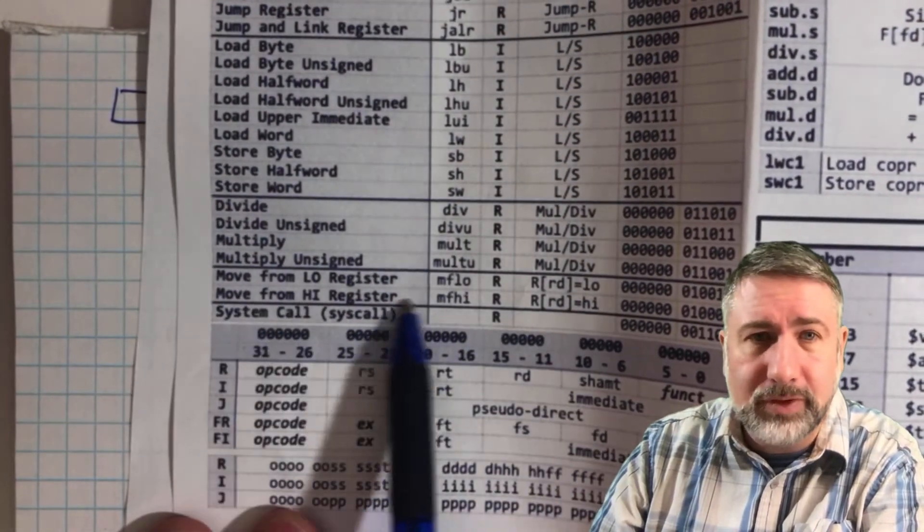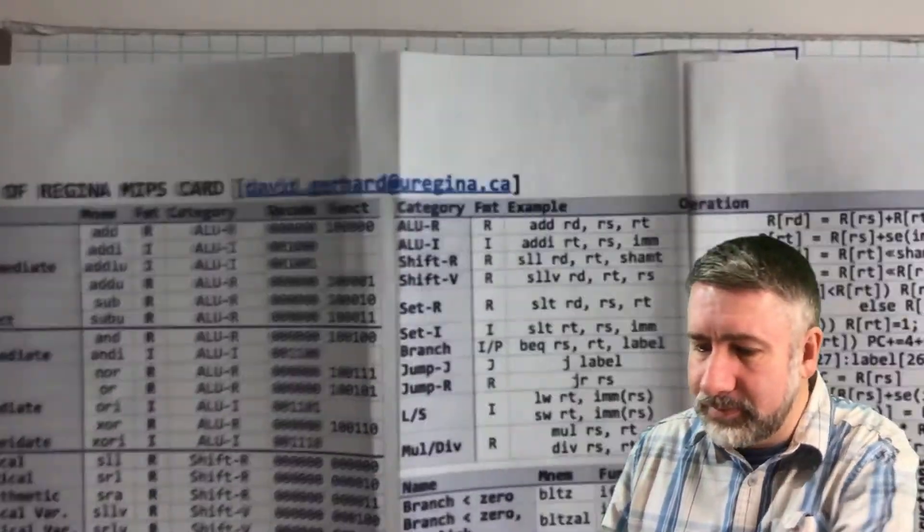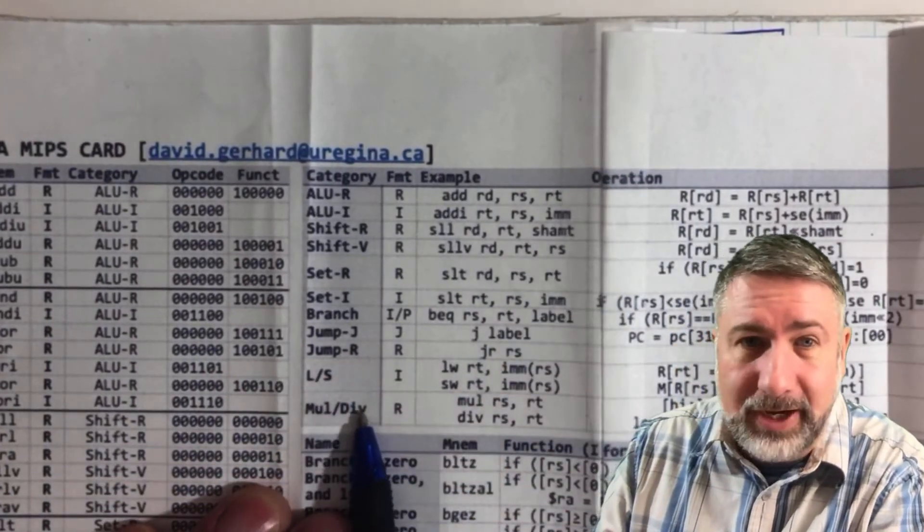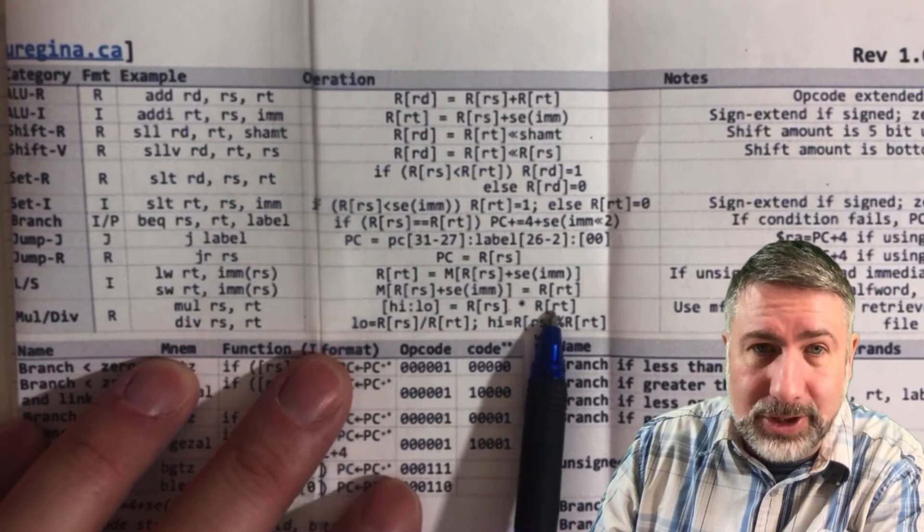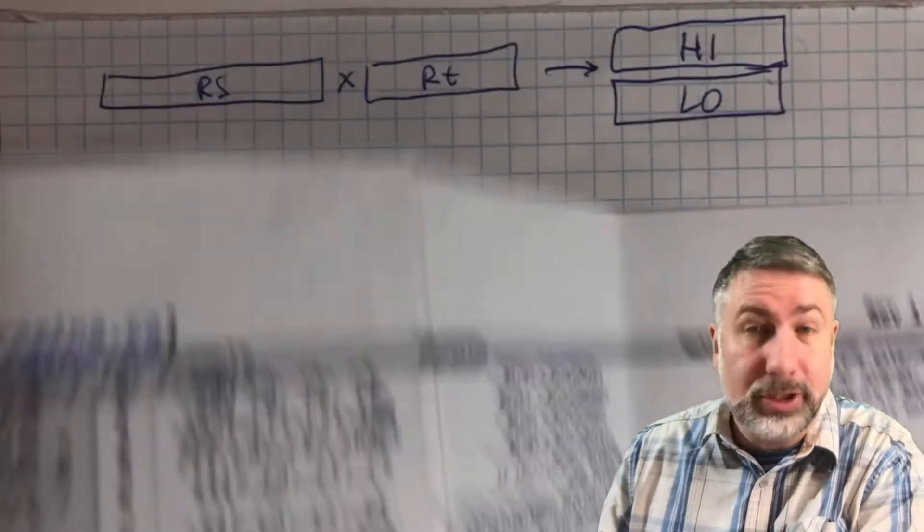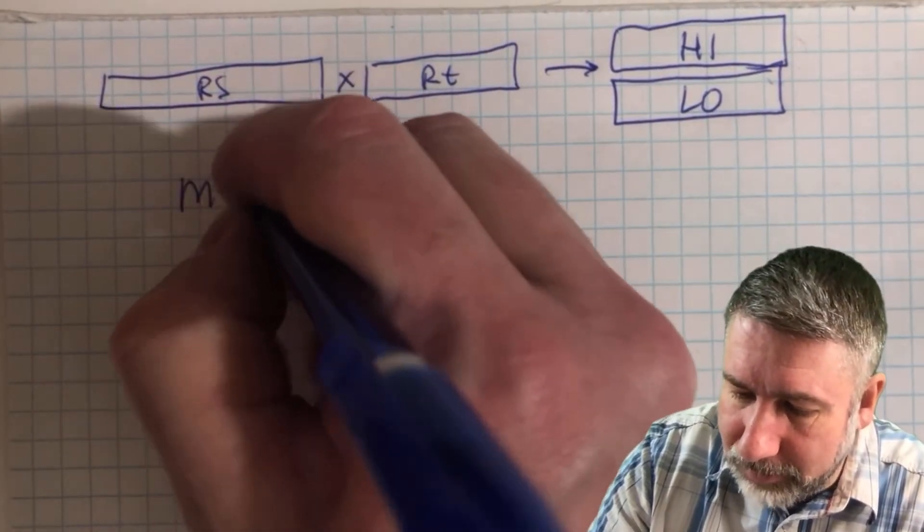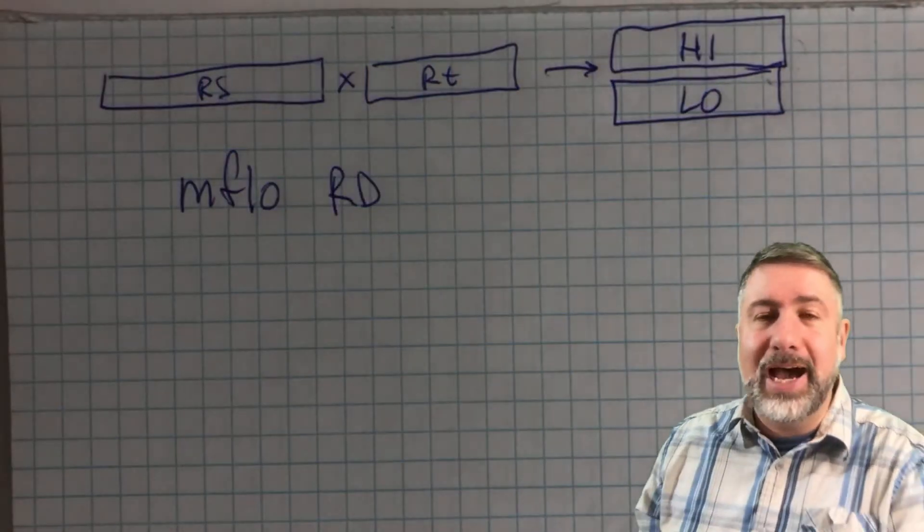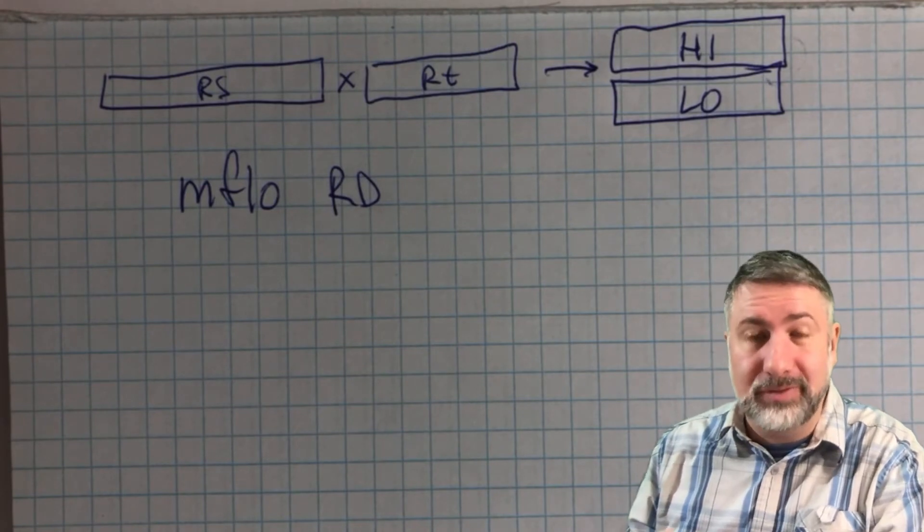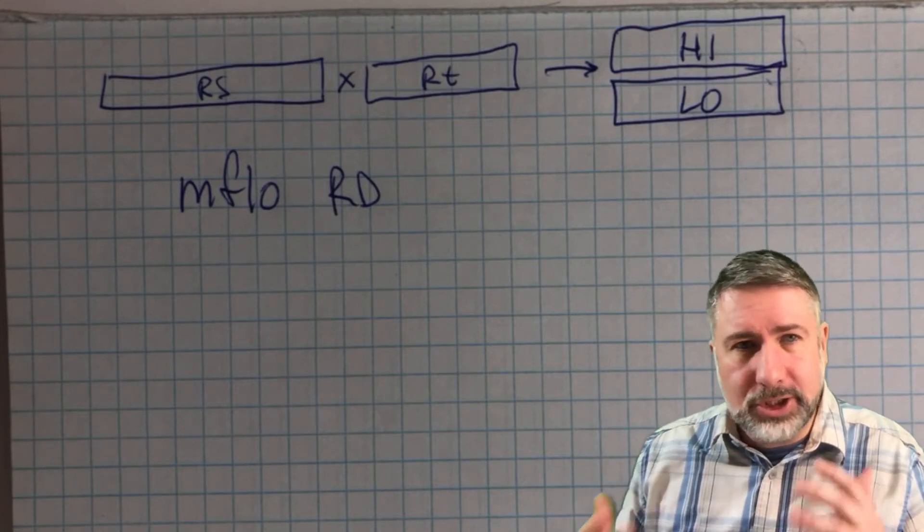But we do have a couple of extra instructions that we also haven't looked at yet, which is move from low, move from high. These are special registers. And if you look at the way that the multiply and divide registers are set up, or the multiply and divide instructions are set up, what you can see is that for multiply instructions, high and low together get the result from RS times RT. So high and low together get the result from RS and RT. And then what you can do is move from low into some register RD. And that will put the result from the low half of the result of the multiplication into a regular 32-bit register that you can deal with.